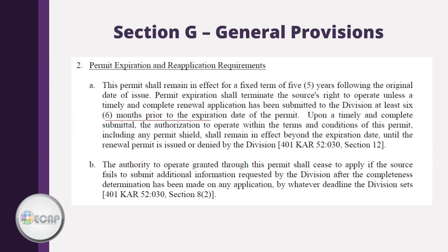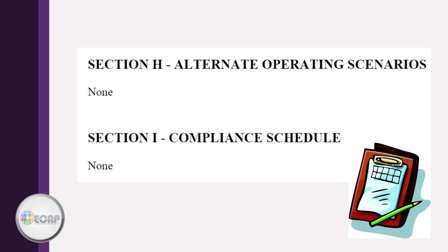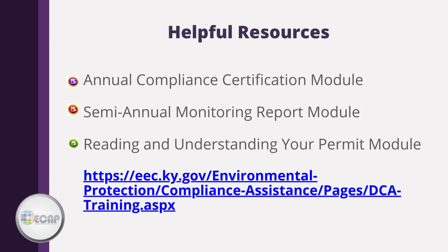Section G is the General Provision Section and is full of information. It is important to note that six months prior to the expiration date of your permit, a renewal must be submitted. Sections H and I may or may not have information listed, depending on if your facility or operations are subject. The following are some additional modules that may be helpful to you.